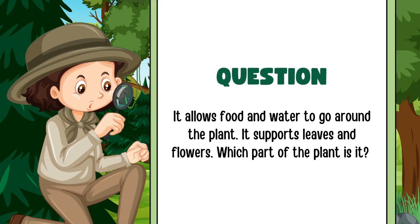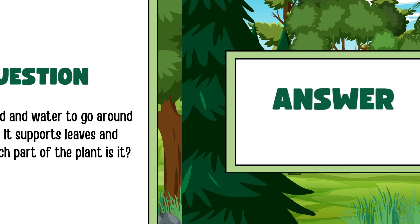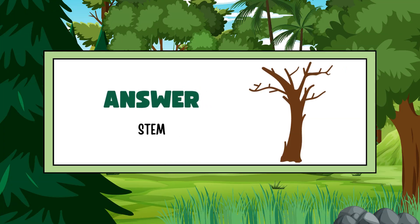Now, it allows food and water to go around the plant. It supports leaves and flowers. Which part of the plant is it? Good. Answer is stem.